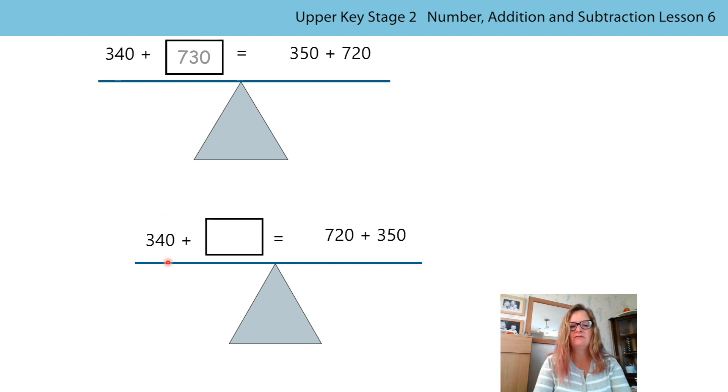So I'm actually going to look at now redistributing from the same number as above the 340 and 350 but they're just in different positions. So I've got 350 is 10 more than 340. So if I subtract 10 from the 350 I will then need to add 10 to the 720 and we will get 730. So it didn't matter where the addend was. We got the same result.